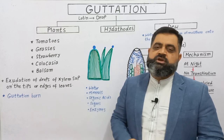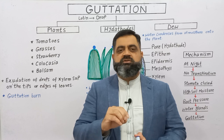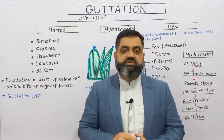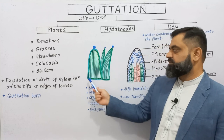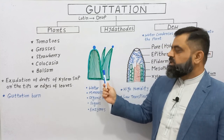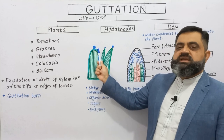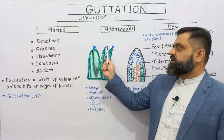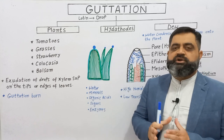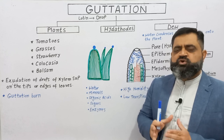Plants usually remove this water through special openings present on the tips or edges of the leaves. If you look at this diagram, these are the leaves of some grass plants, and on the tips of these leaves you can see little drops of water. These drops of water are due to the process of guttation.